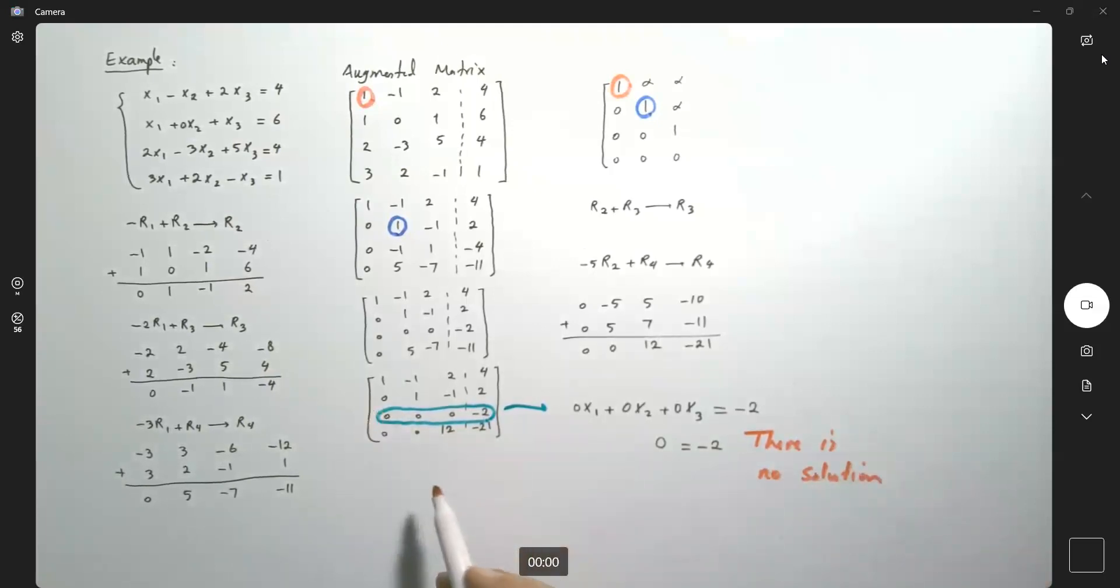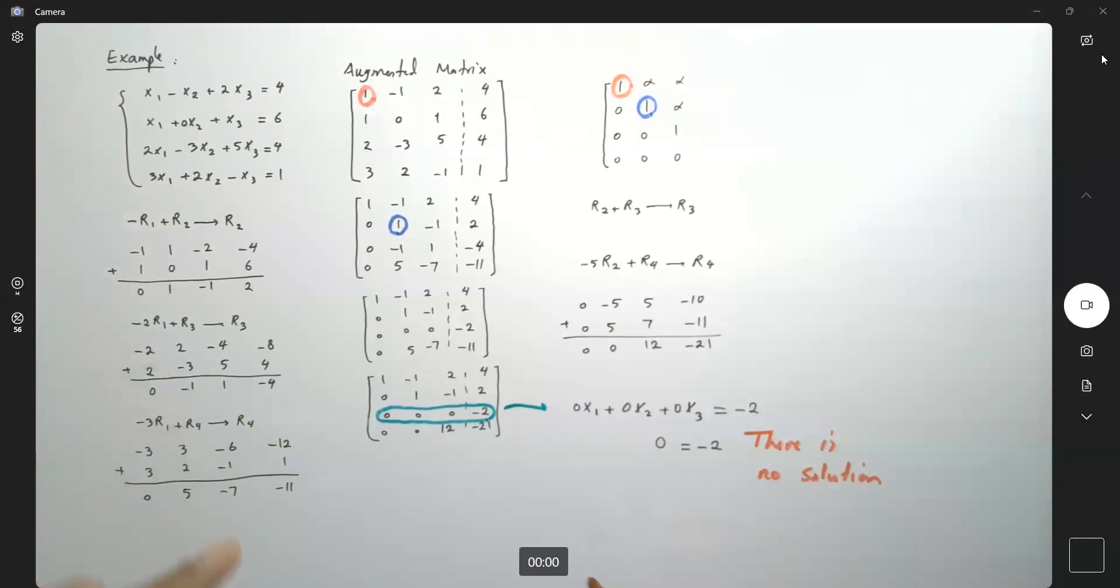So before continuing to the next step, always check if you have contradiction in your system. This line converted into linear equation results in zero equals to negative two, which doesn't make sense. This is a contradiction. What's the meaning of that? It means that this system has no solution. There is no intersection between these four equations. There is no solution for the system.